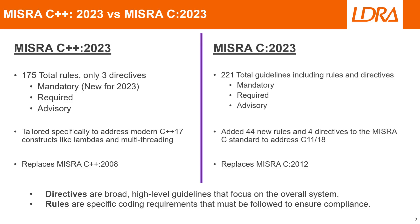Both of these standards have a total number of rules and directives organized into three different categories: mandatory, required, and advisory. Directives are broad, higher-level guidelines that focus more on the overall system rather than a specific coding requirement, whereas rules are specific coding requirements that must be followed to ensure compliance with the MISRA standard. Both standards are tailored specifically to address the modern requirements for C and C++ respectively, and they replace their respective older variants in MISRA C++ 2008 and MISRA C 2012.